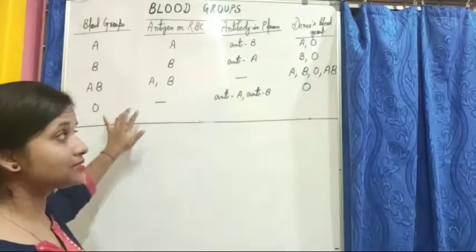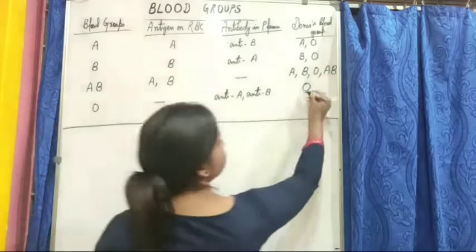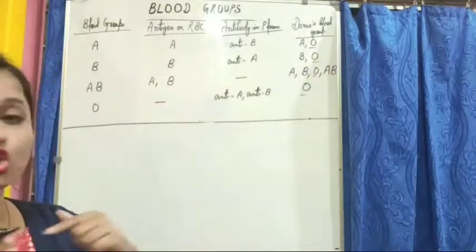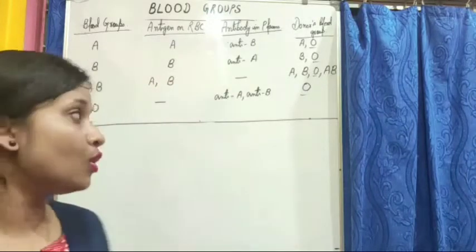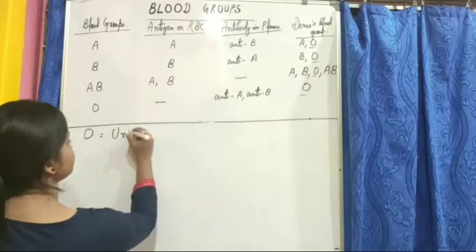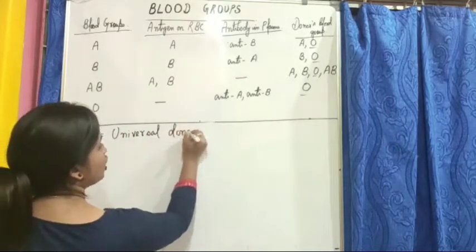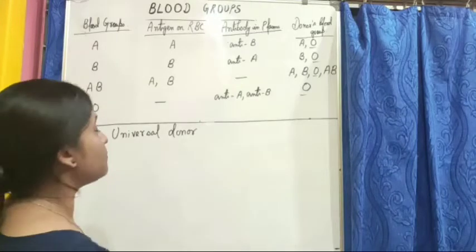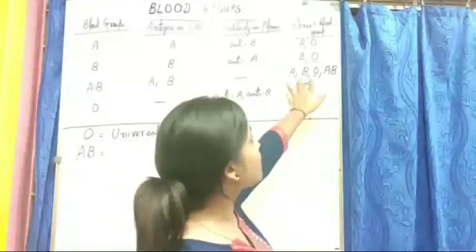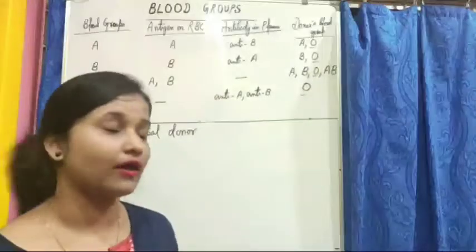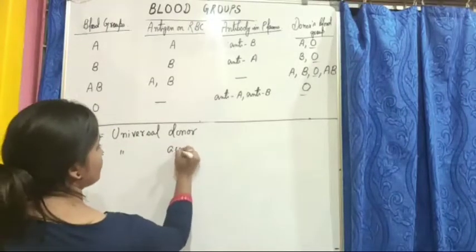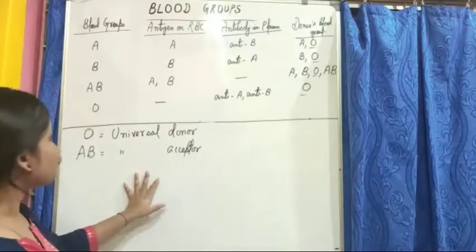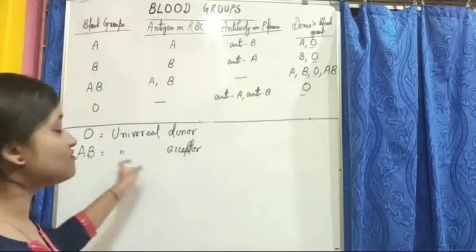From this chart, it is clear that blood group O appears in the donor column for all blood groups, meaning people having blood group O can donate to everybody. So O is known as the universal donor. Blood group AB can receive blood from people having any blood group, so AB is known as the universal acceptor. This question often comes in your exam.